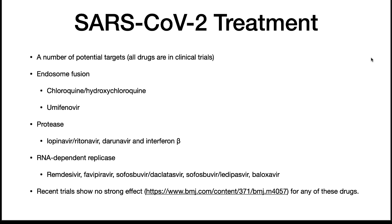Umifenovir is another drug under investigation but trials are not finished. Protease inhibitors such as lopinavir, developed for HIV — another RNA virus — along with ritonavir have been tried without much success. Interferon B, which has been shown to be clinically effective against other coronaviruses, was tested and again it has not been so effective against SARS-CoV-2.